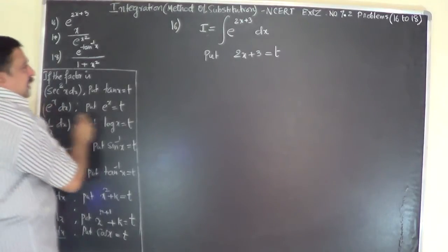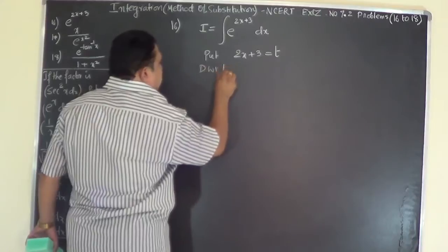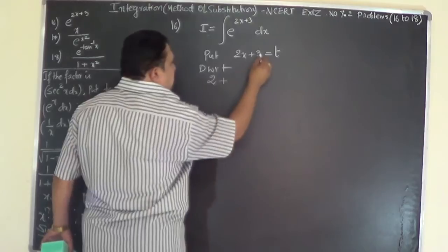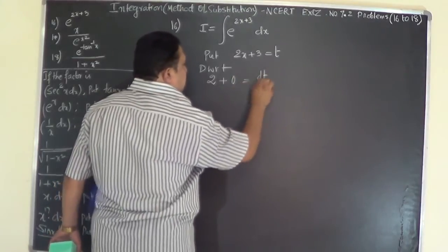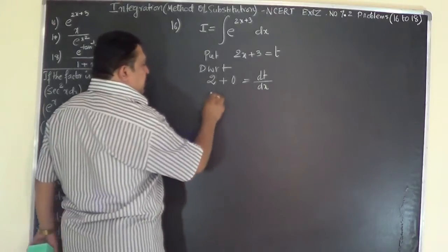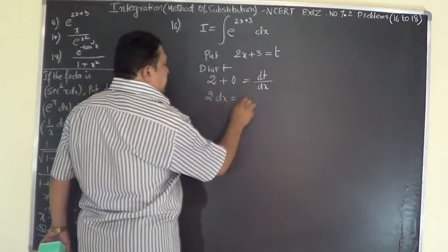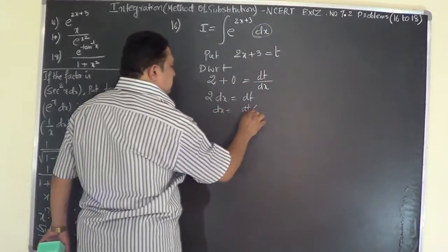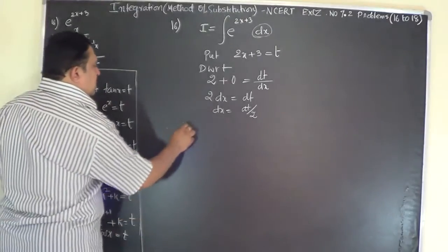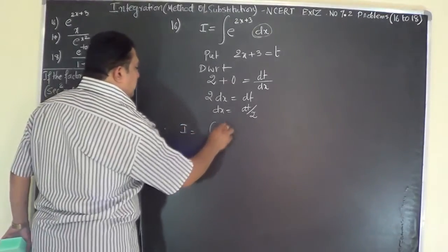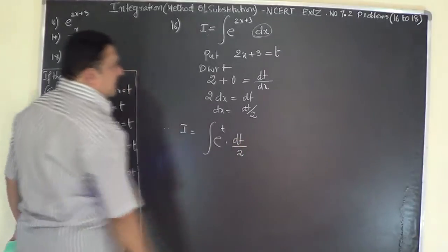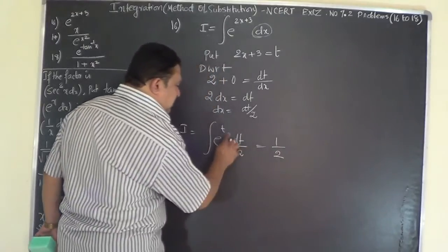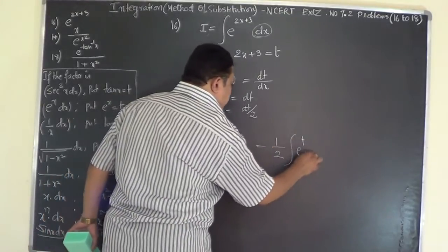Now let's see what happens to the value of dx. Differentiating with respect to x: the differential coefficient of 2x is 2, plus differential coefficient of 3 is 0, equals dt by dx. So 2 dx equals dt, and therefore dx equals dt by 2. Take the half outside the integral sign.